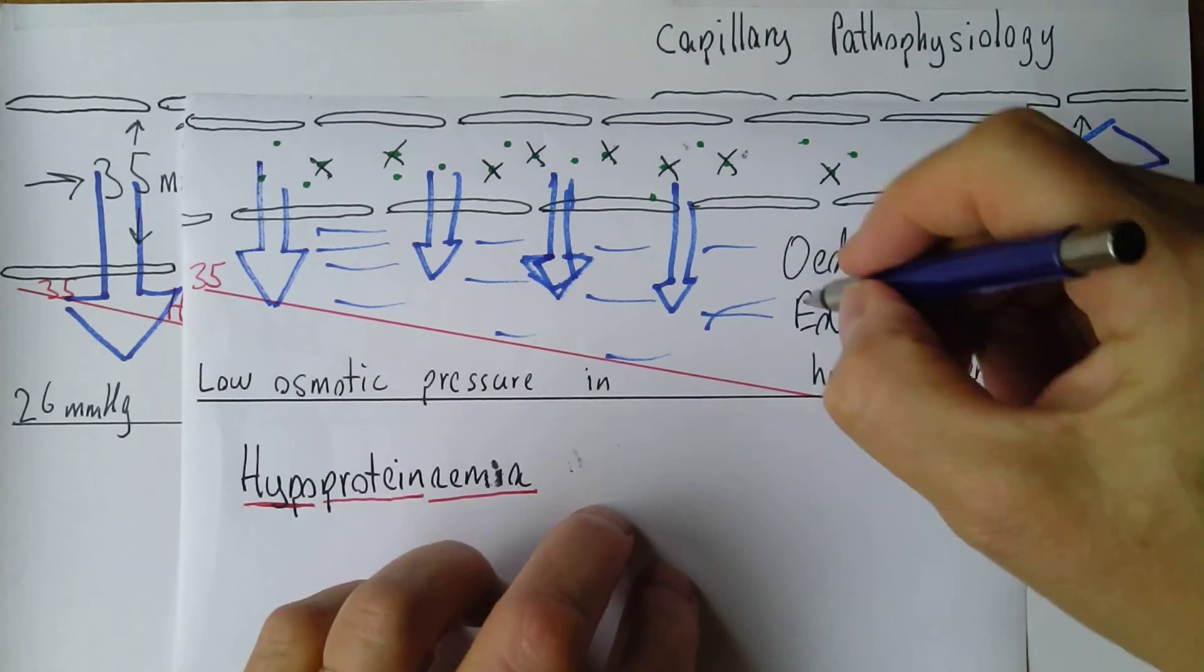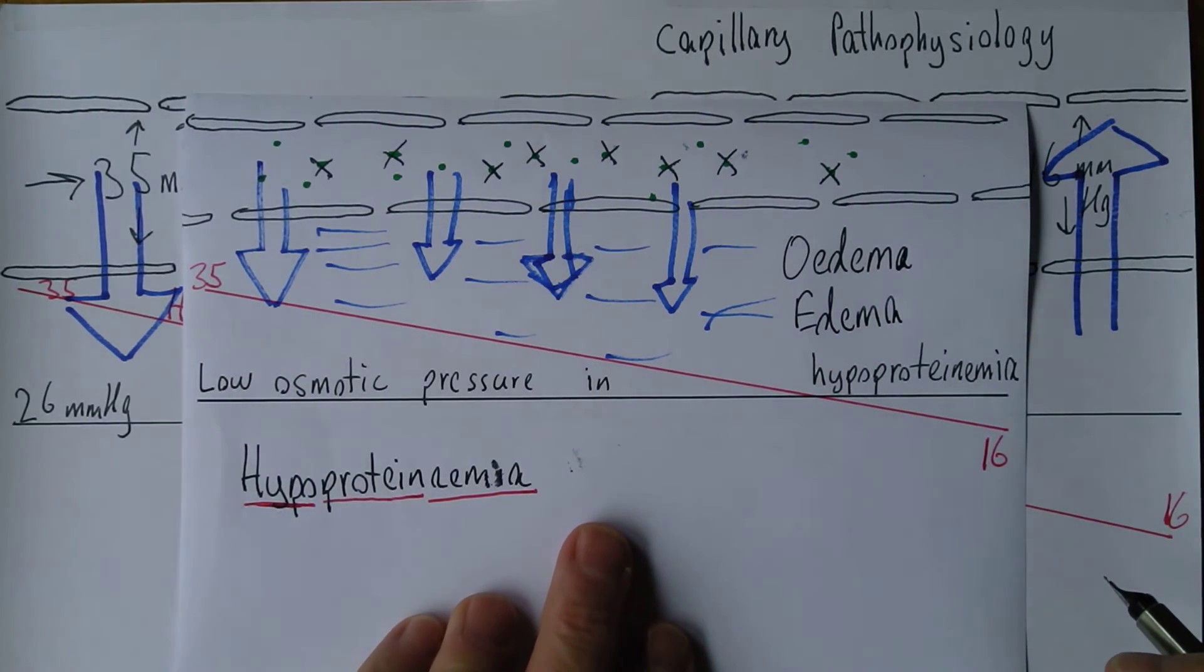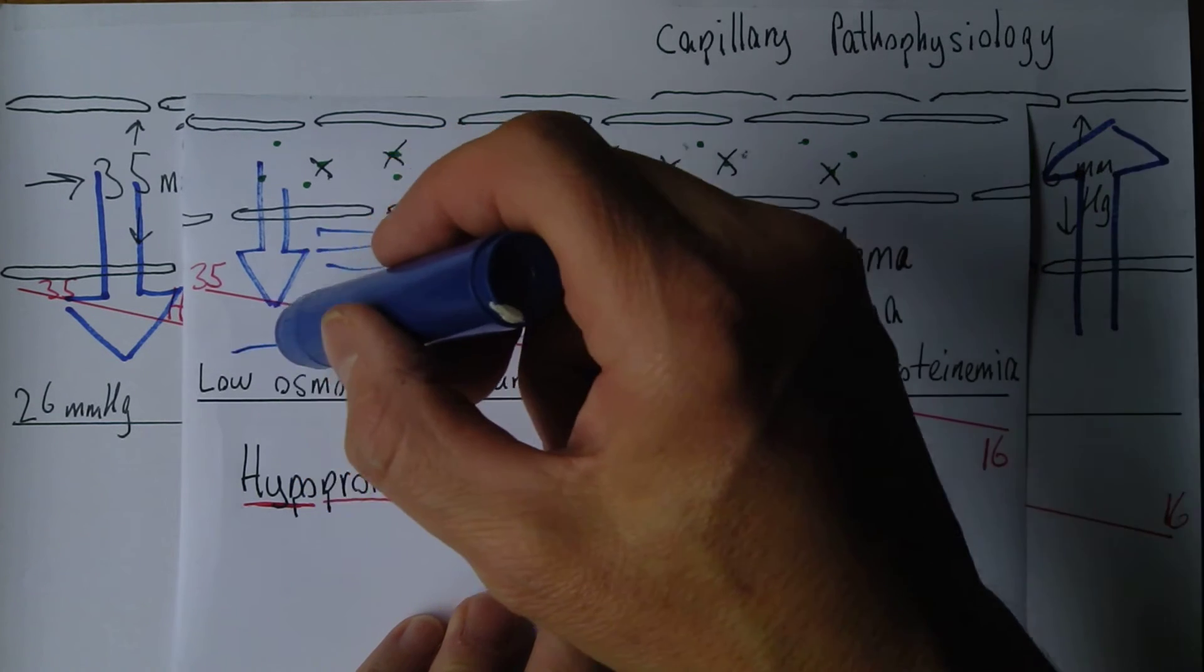This is oedema. In England we say oedema with an O. So we become soggy, there's too much tissue fluid.